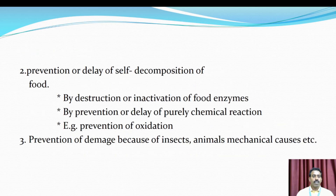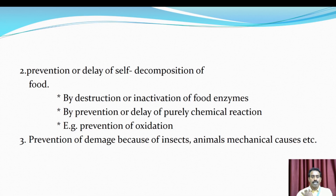By killing microorganisms using heat or radiation. The second principle is the prevention or delay of self-decomposition of food — by destruction or inactivation of food enzymes, and by prevention or delay of purely chemical reactions such as prevention of oxidation reactions. The third principle is prevention of damage due to insects, animals, mechanical causes, etc.